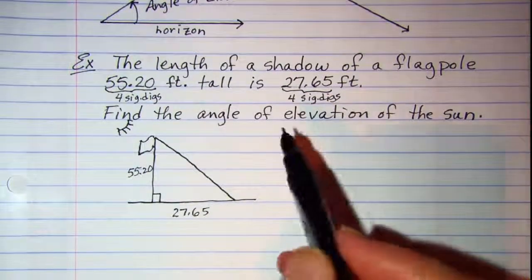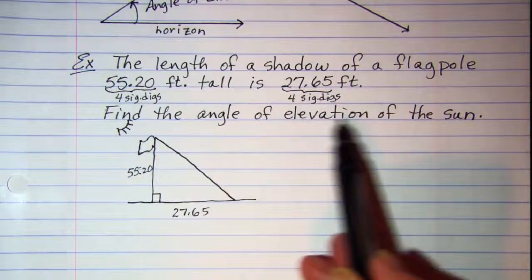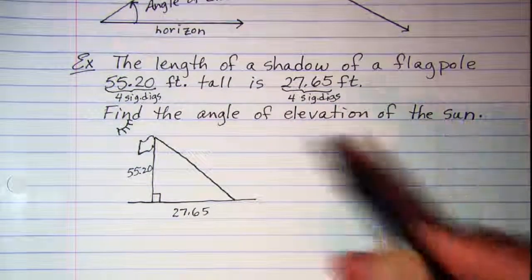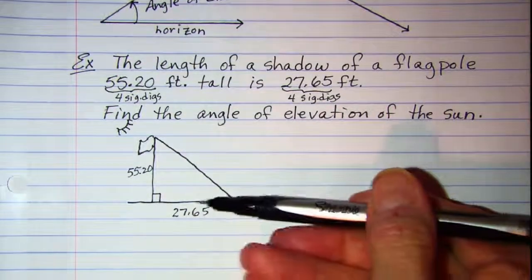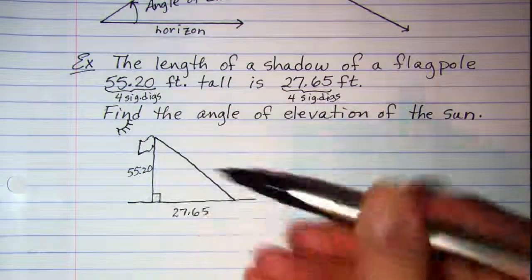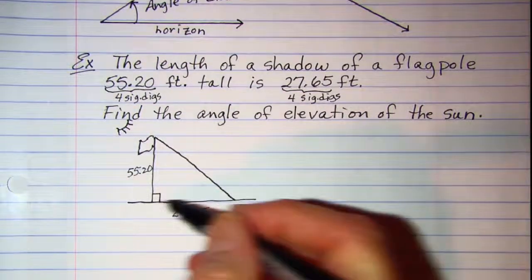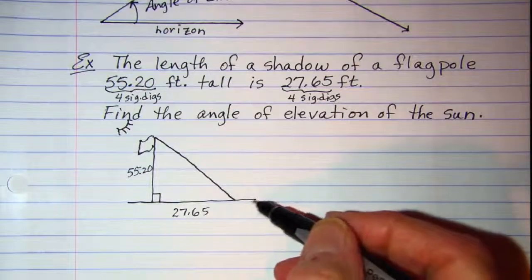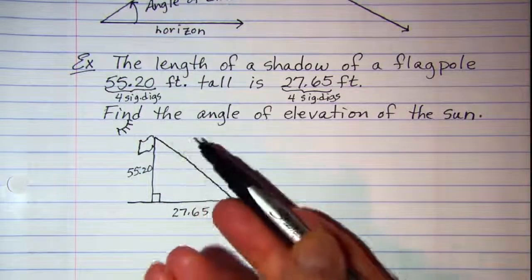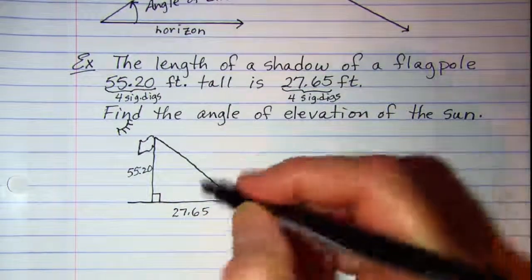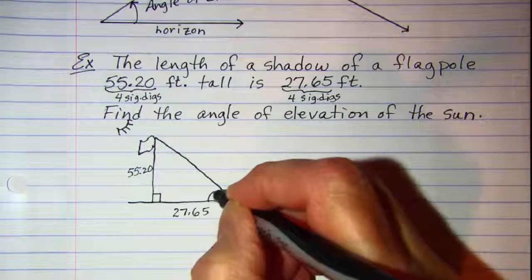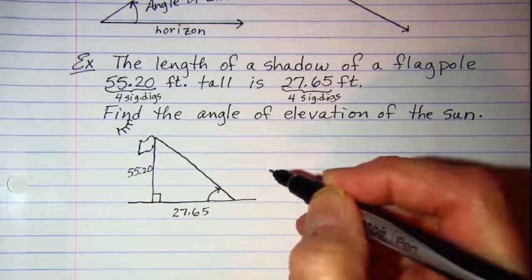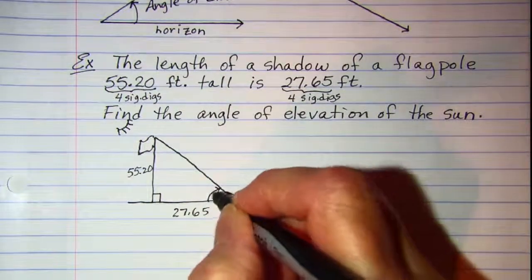And our question is to find the angle of elevation of the sun. So from our ground, this is our horizontal, and we're moving clockwise and going up. So the angle of elevation is going to be right here.